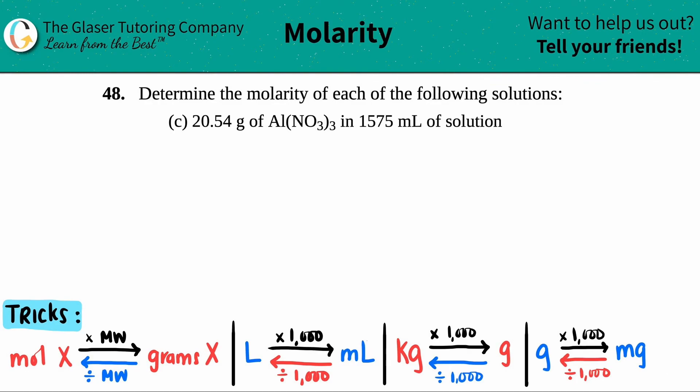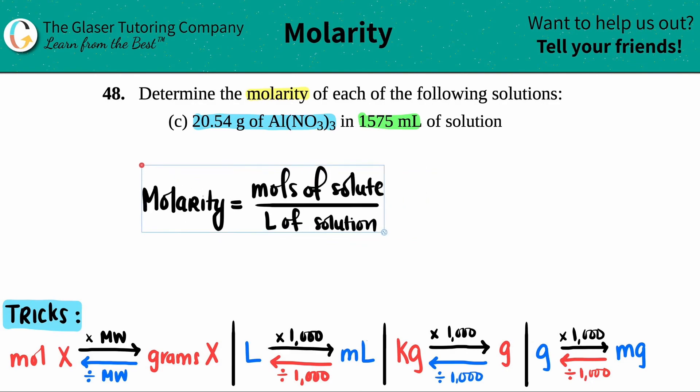Number 48: Determine the molarity of each of the following solutions, and then we have letter C. In this case they told us that we had 20.54 grams of aluminum nitrate, Al(NO3)3, and that's in 1575 milliliters of solution. We're looking for molarity. What is the formula for molarity?